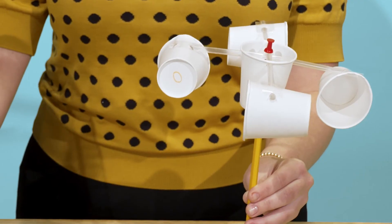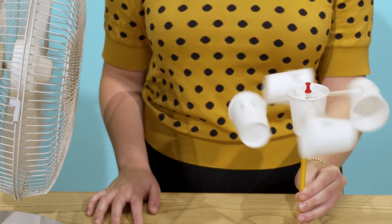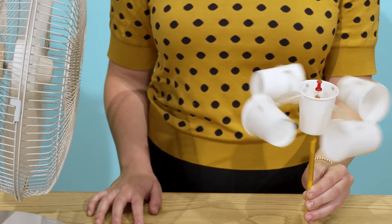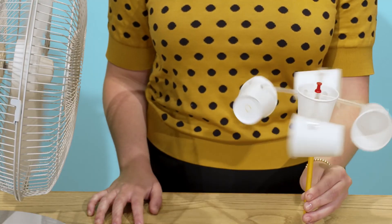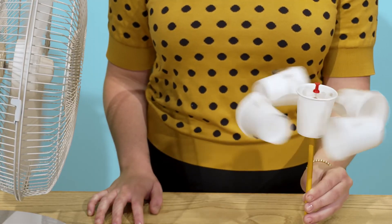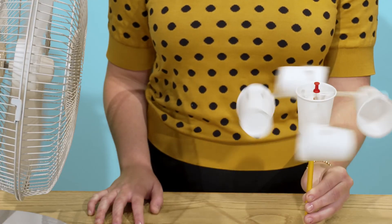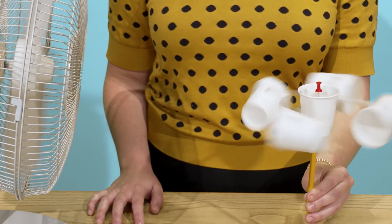Remember the drawing you made on one of the cups? You're going to count how many times you see it go by as the anemometer spins. Set a timer to 15 seconds and count the rotations the anemometer makes. To get the number of rotations per minute, multiply the number by four.